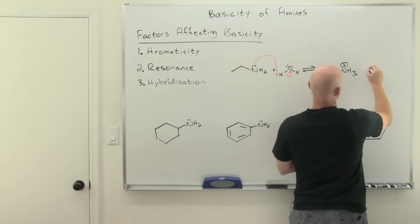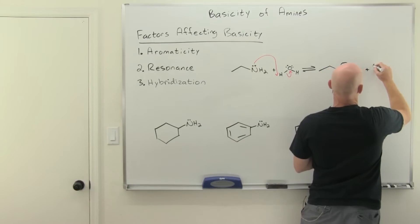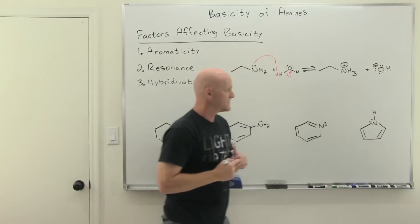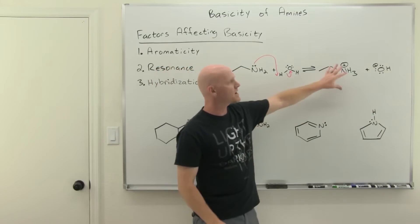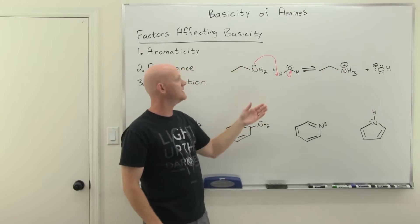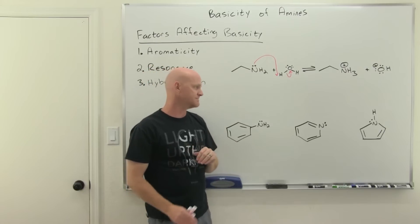And then when you deprotonate water, you get hydroxide. If you looked at the equilibrium constant for this reaction, products over reactants, that would be the Kb in this case for ethylamine.